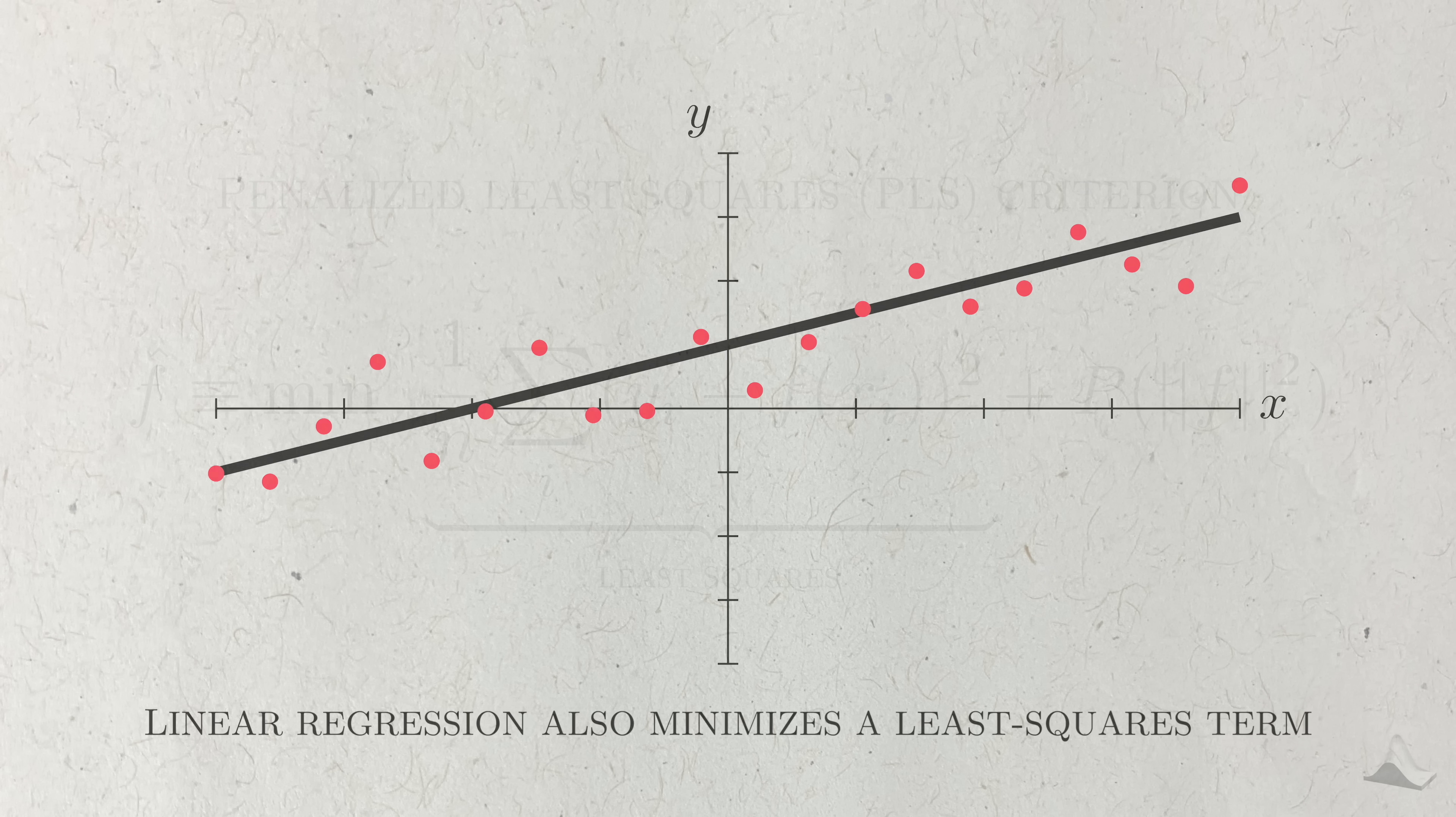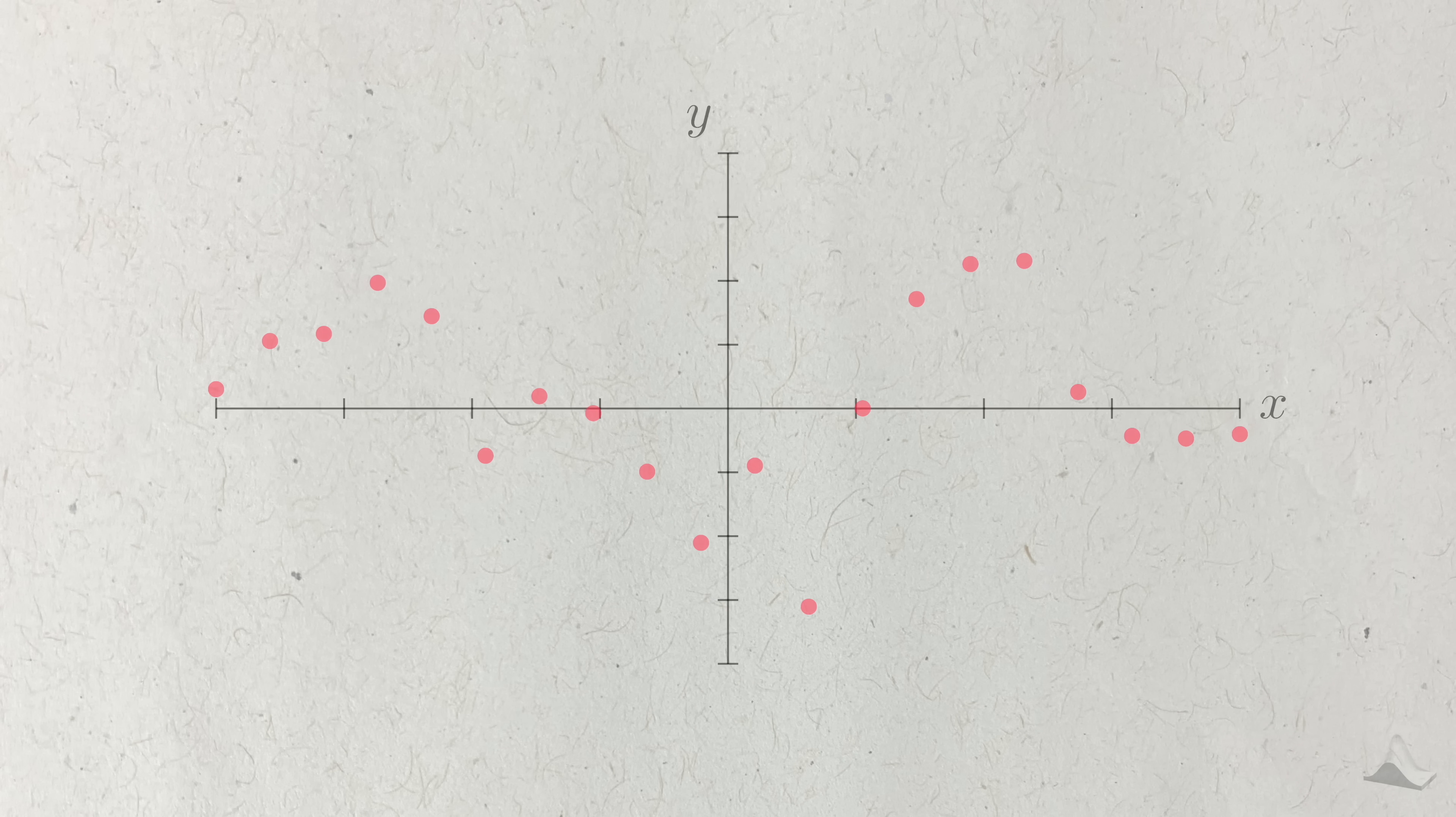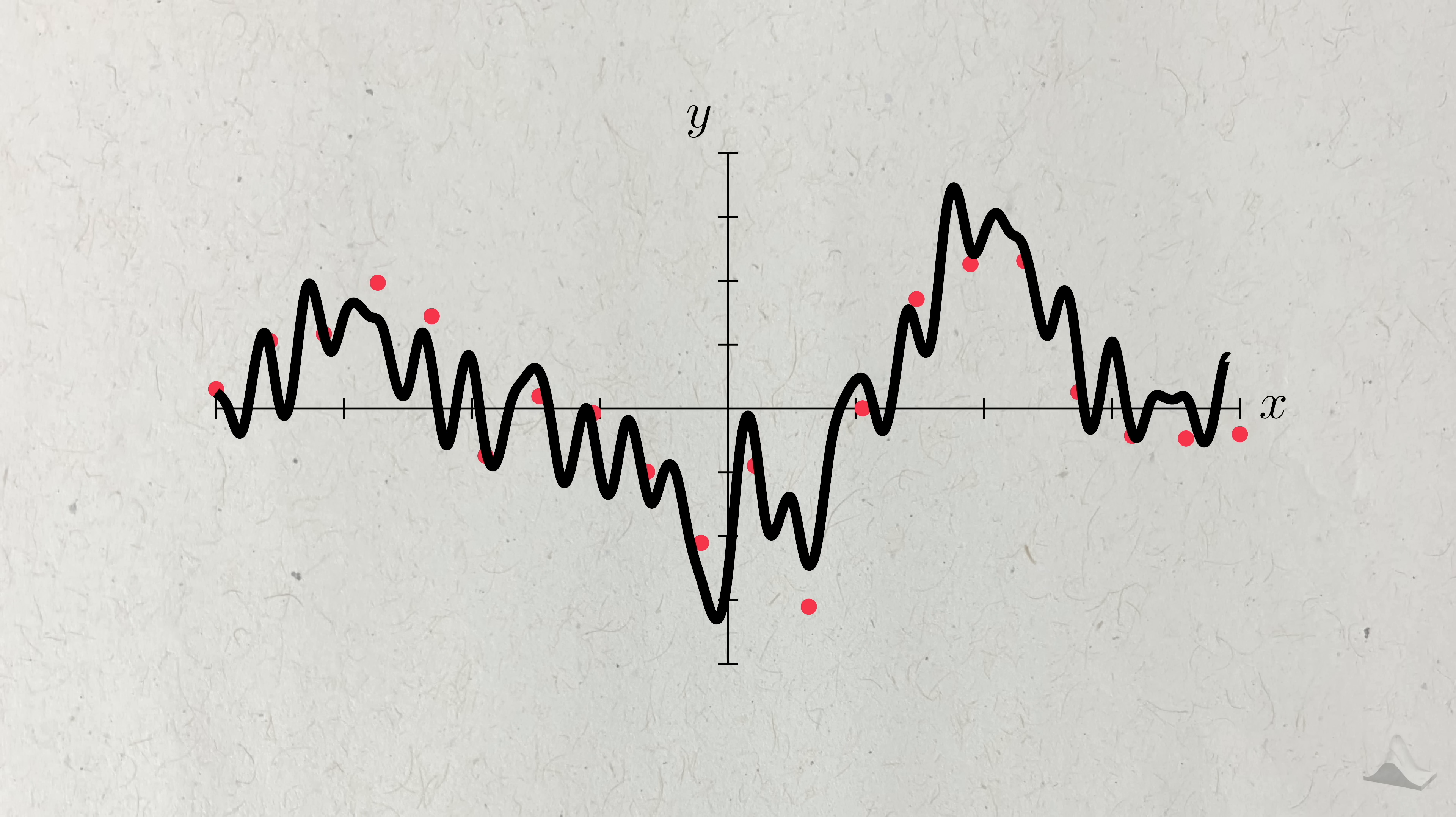But unlike linear regression, we can't just rely on this term alone. If we try to estimate a function purely on this term, we'll tend to get functions that hug the outcomes too closely, resulting in functions that have this rough and wiggly shape. Good for minimizing prediction error, but bad for generalizing to future data.